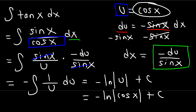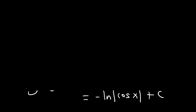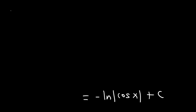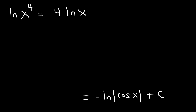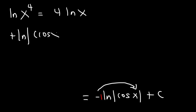We don't need to leave the answer in this form. A property of logs you need to know is the power rule: ln(x⁴) equals 4·ln(x), so you can move the exponent to the front or back. Right now we have a negative 1 in front of the natural log expression, so we're going to move it to cosine as an exponent, giving us positive natural log of cosine to the negative one power.